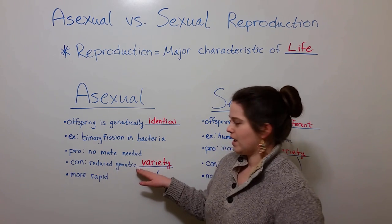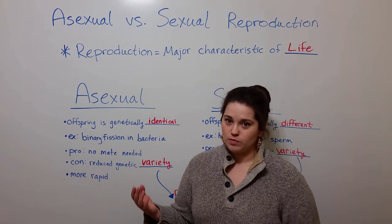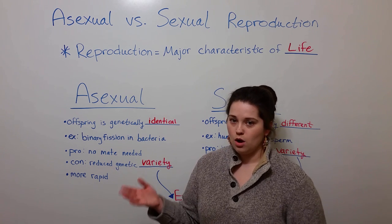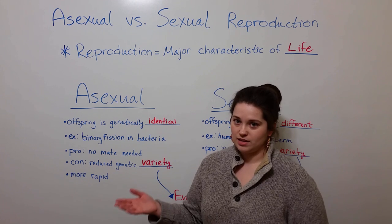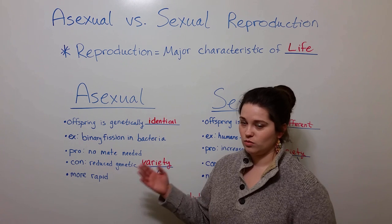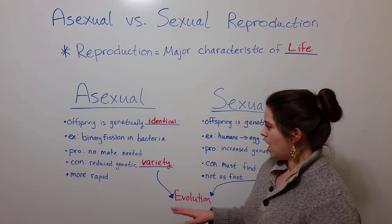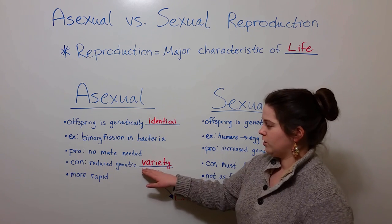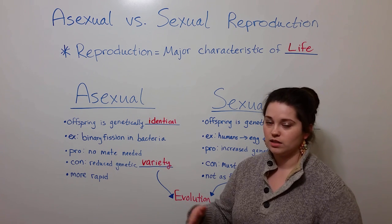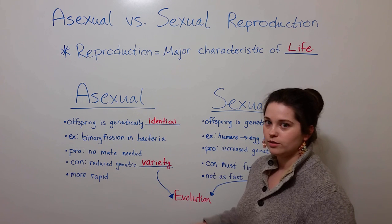Whenever you have reduced genetic variety — whenever the genetic variety is based solely on random mutations — organisms are dependent on having the right mutations for the environment at that given time. If they don't have the correct mutations that will allow them to survive in a changing environment, then the populations could die out. Of course, if they do have the genetic variety necessary, then beneficial genetic mutations can spread through a population over time, and that change over time leads to evolution.